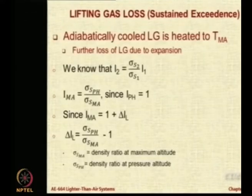This is what you need: delta IL is equal to sigma S pH upon sigma S MA minus 1. For a sustained exceedance, so IMA will be equal to 1 plus this particular ratio, or it will be simply IMA will be equal to the ratio of the two sigmas.